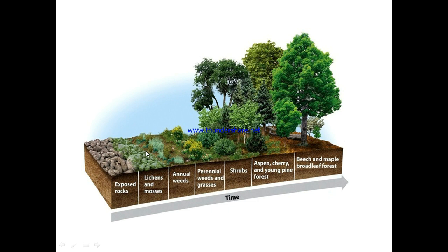When lichens grow, other annual weeds begin to grow, then perennial weeds and grasses, then shrubs come up and pines also come up, so we have a thick forest. Eventually broad-leaved trees like the maple come over. This is what happens over a long period of time — a gradual replacement of a plant community — and this is what we mean by ecological succession.